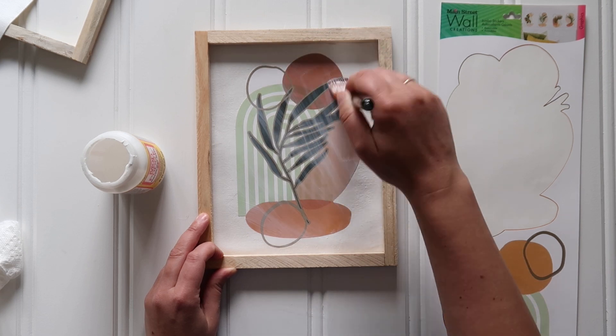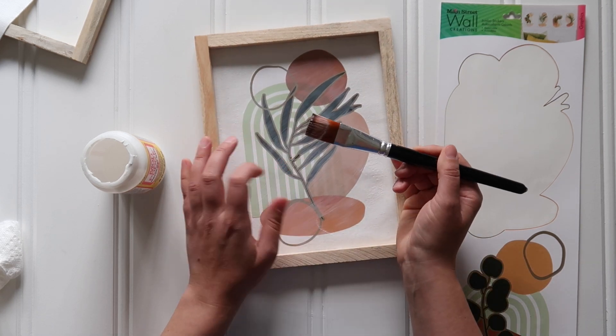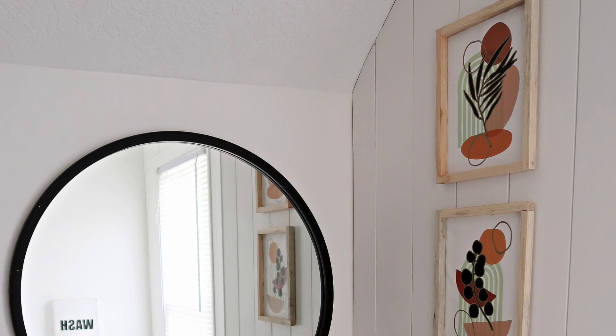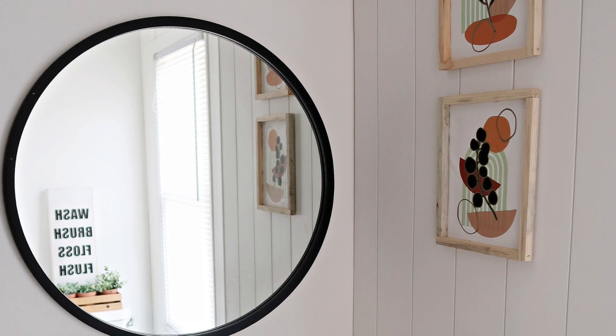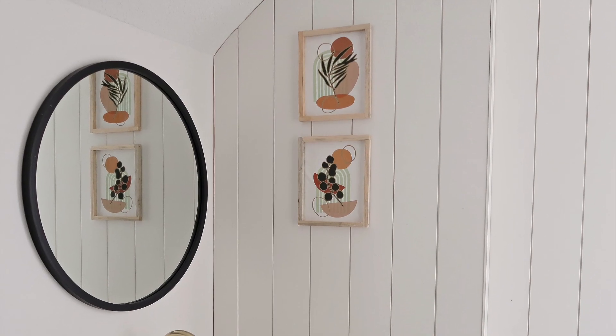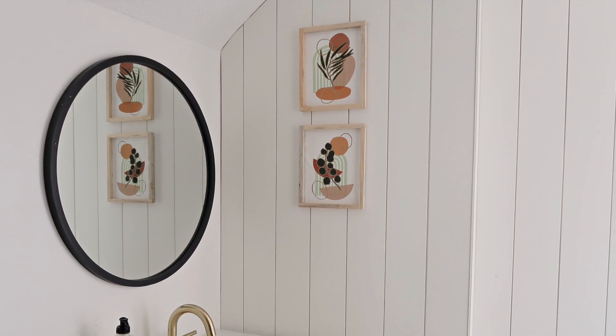Set everything aside to dry, and I made another one with a second wall decal. There were four in this packet, so I only used two, and then hung these up on the bathroom wall in our upstairs bathroom with some command hooks. Way too easy! I think this just adds a cute little pop of color, a fun modern little wall accent in this space.